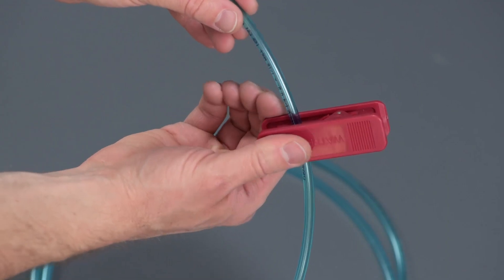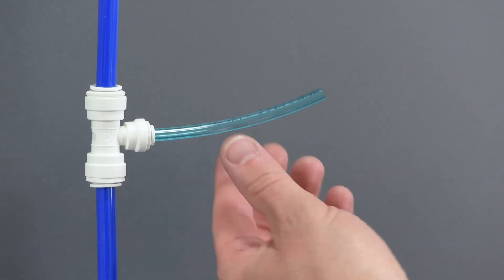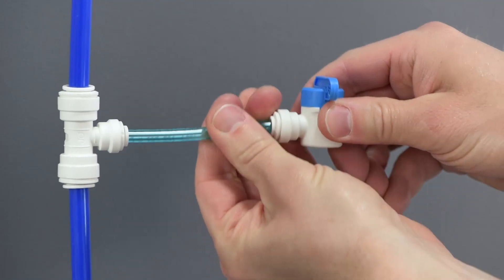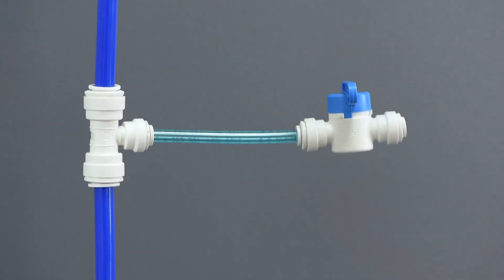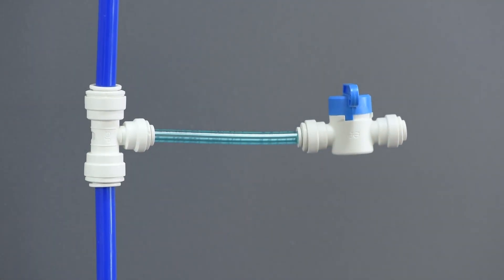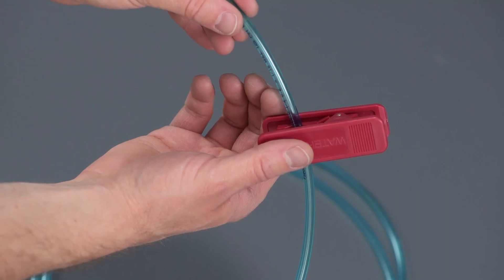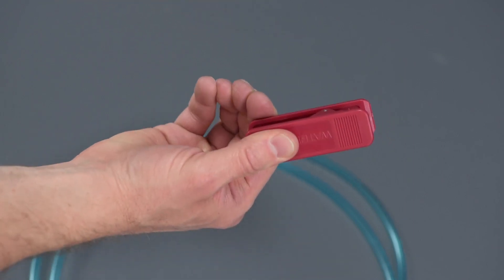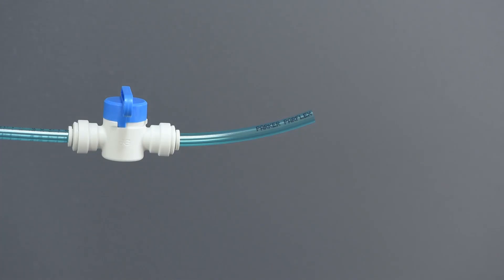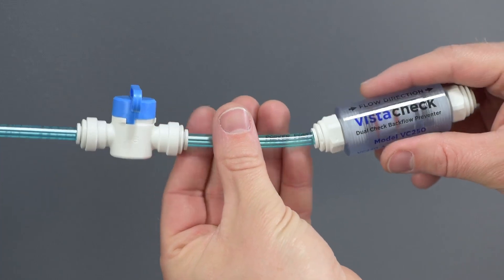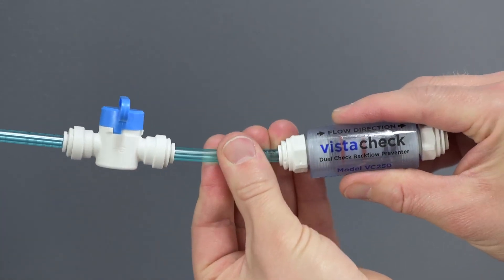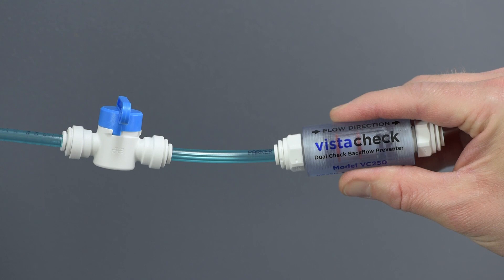Next, cut a 3 to 4 inch piece of the blue poly tubing and connect the installed fitting from our last step to the inlet of the inline water valve provided. Be sure the valve is in the closed position. That blue lever should be 90 degrees relative to the valve body. Cut another 3 to 4 inch piece of blue poly tubing and connect one end to the outlet of the inline valve and the other end to the inlet of the supplied CSA certified VistaCheck DualCheck backflow preventer.